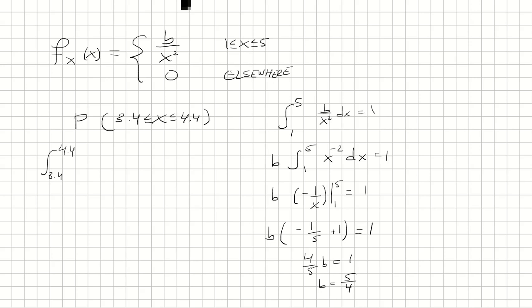And b here is 5 fourths over x squared, so we have 5 fourths, we'll pull it outside. And that's going to be 1 over x squared. So we have 5 fourths, antiderivative of 1 over x squared we said is negative 1 over x, and evaluate it from 3.4 to 4.4.